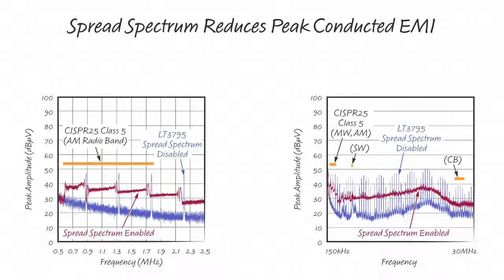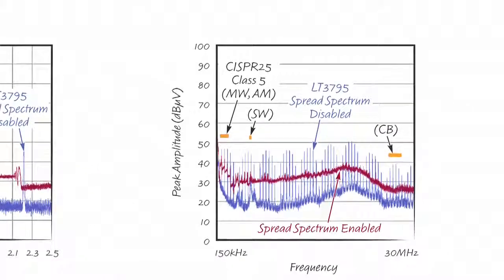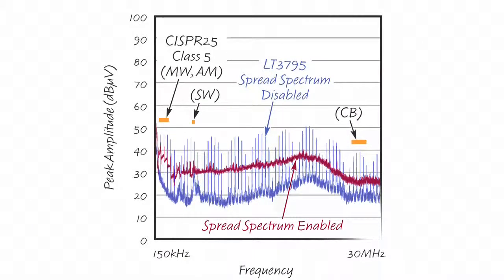CISPR-25 requires that both average and peak conducted EMI limits are met. Spread-spectrum also gives us up to 15 dB microvolts of conducted peak EMI attenuation.